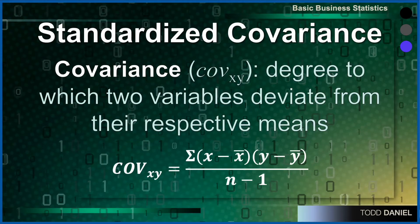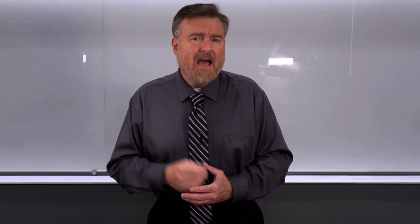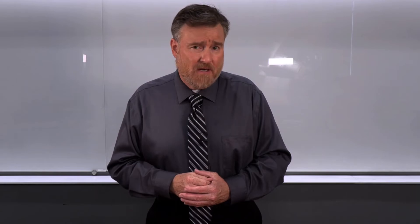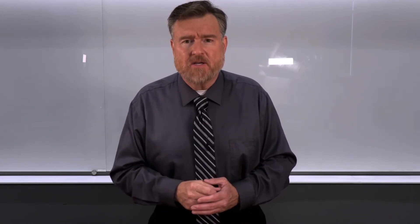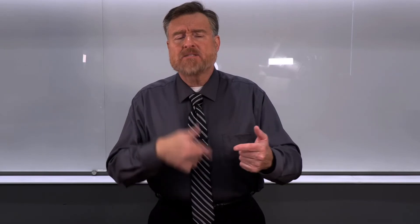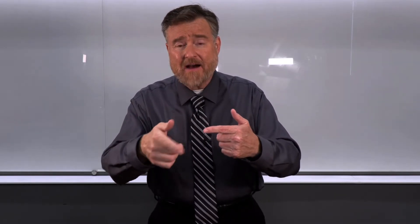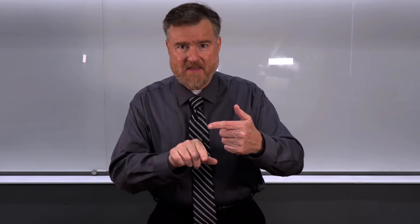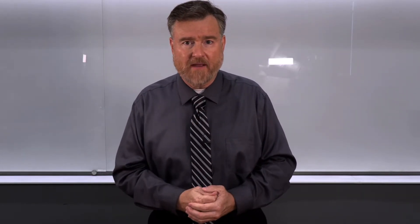Covariance is the degree to which two variables deviate from their respective means. Look at the formula for covariance: we take (x minus the mean) and (y minus the mean), add them up, and divide by n — that formula looks a lot like an average, and in fact it is. Now, recall z-scores and standardization: we took x minus the mean and divided by the standard deviation. Let's do exactly the same thing with our covariance.